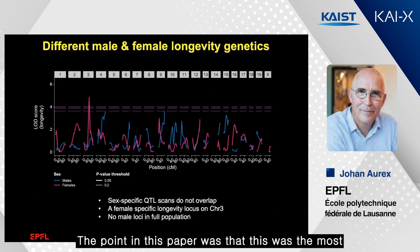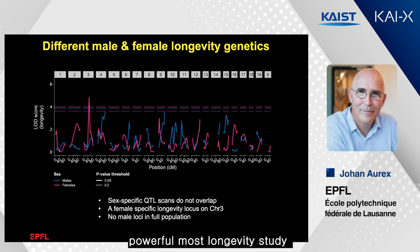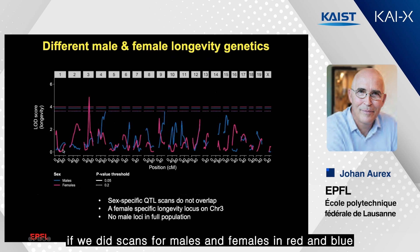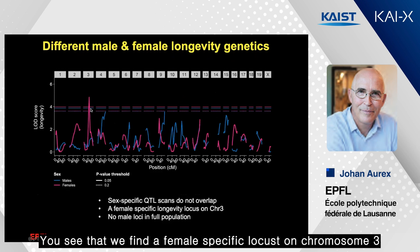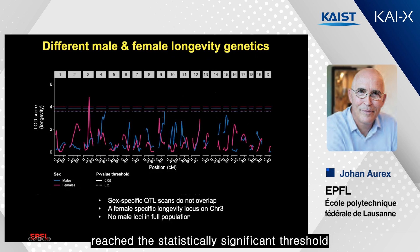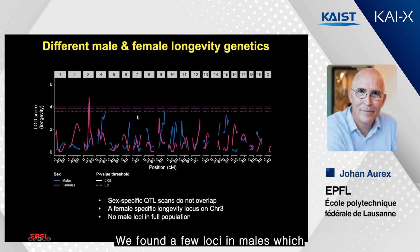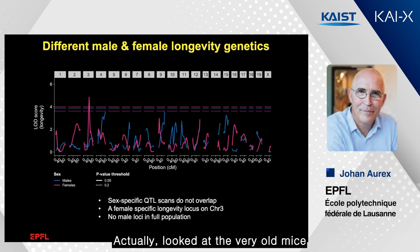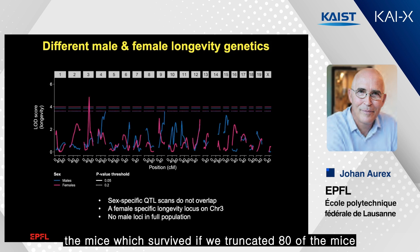A disappointment in this paper was that in genome-wide scans for longevity loci in males and females, we could not find any universal longevity locus. We found a female-specific locus on chromosome 3, but for males, no locus reached statistical significance. A few male loci became significant only when we truncated the population to the very oldest mice, those surviving beyond the 80th percentile.